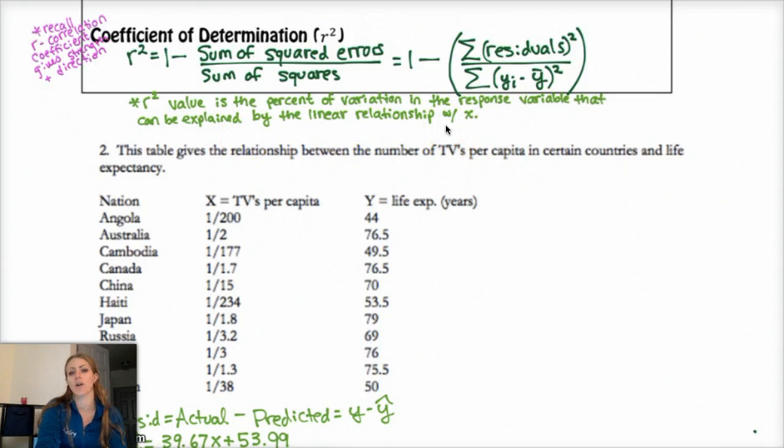Now, if r squared is 80%, then only 80% of that variation can be explained by the linear relationship with x. The other 20% is explained by something else that you're unaware of.